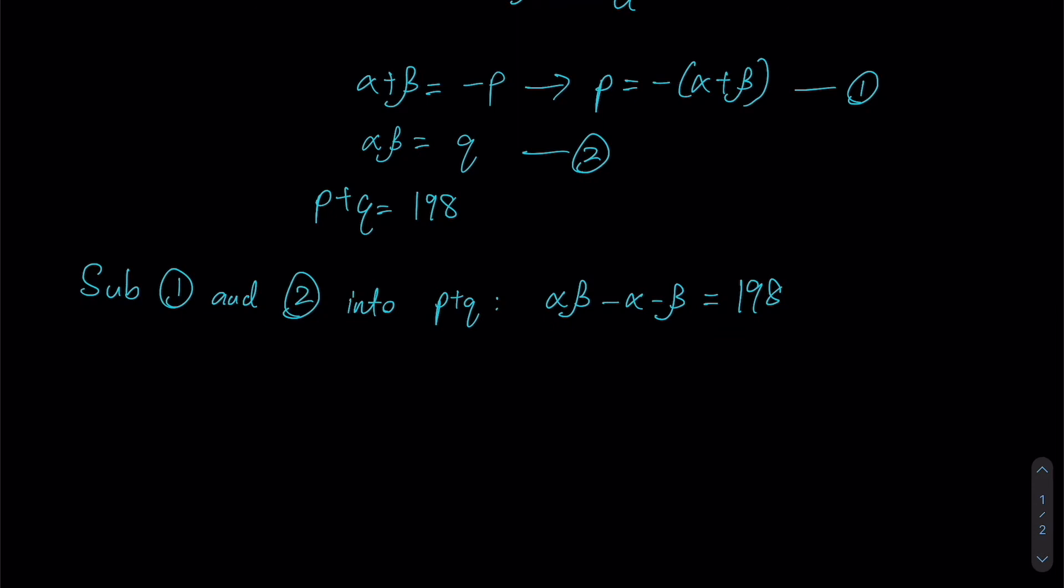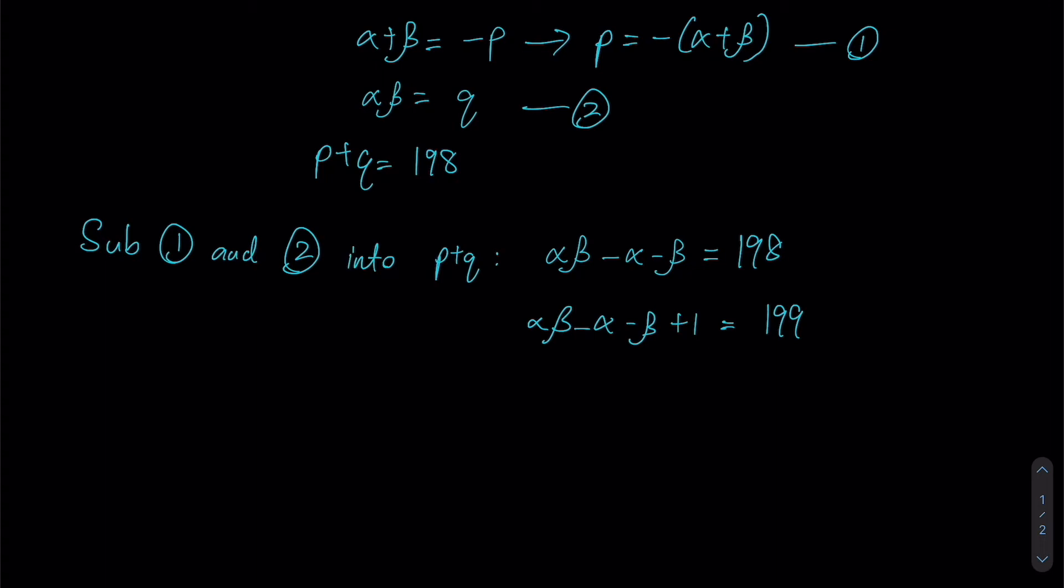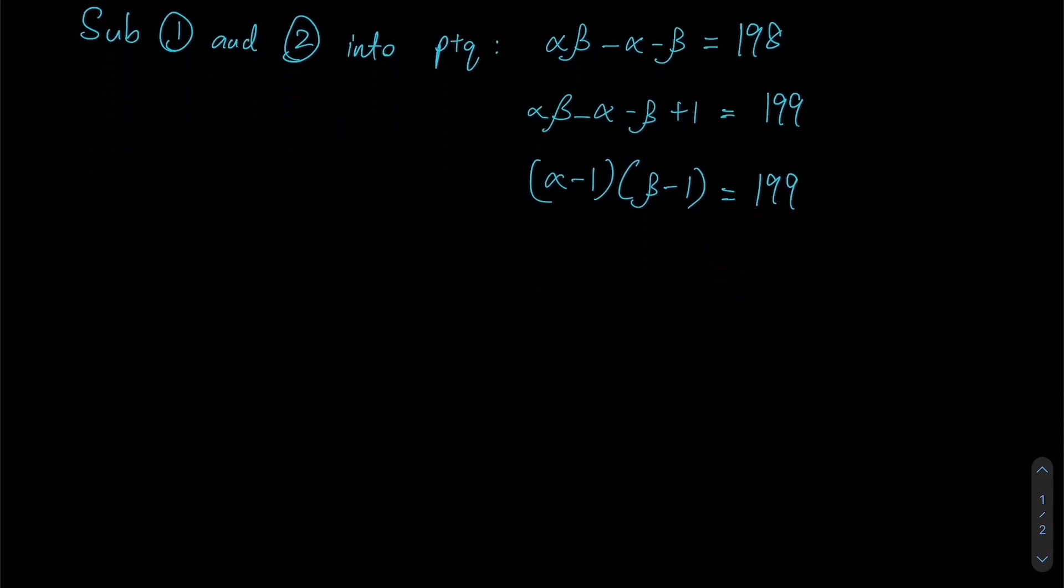This actually almost looks like an expression that can be factorized because you have αβ - α - β, but we're just missing a constant. Seeing as all our coefficients here are pretty much just 1, a good idea would be to introduce +1 on the left-hand side, and then I'll have to add 1 to 198 as well. This can now be factorized into (α - 1)(β - 1) = 199.